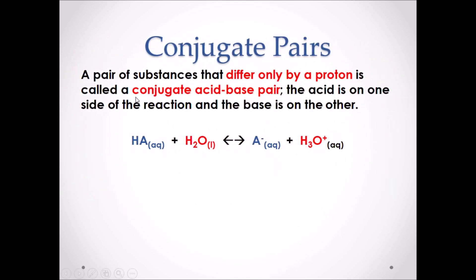That brings us to conjugate pairs. A pair of substances that differ only by a proton or hydrogen are called conjugate acid-base pairs. The acid is on one side of the reaction and the base is on the other. In our chemical equation, HA — a general formula for an acid — reacts with water (H2O), which is our base. The acid transfers a hydrogen to the base, resulting in A-, our new base, and H3O+, our new acid.